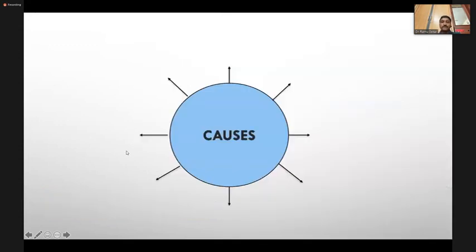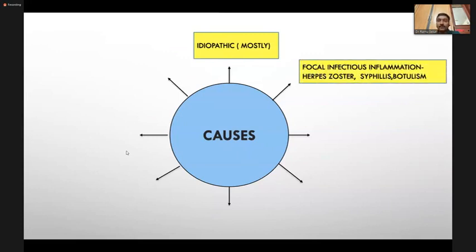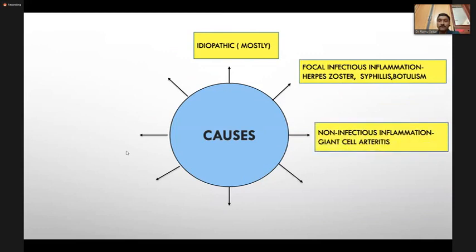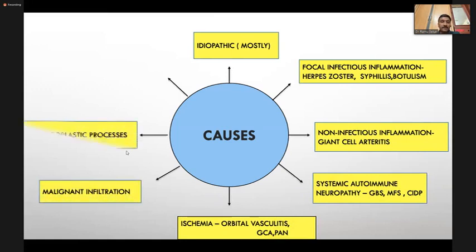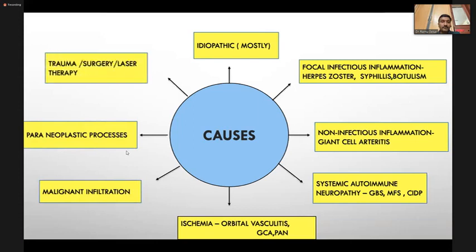Causes of tonic pupil include: idiopathic (mostly), post-infectious (herpes, syphilis, botulism), non-infectious inflammation, giant cell arteritis, systemic autoimmune disorders such as GBS and Miller-Fisher variant, CIDP, ischemia including orbital vasculitis and GCA and PAN, malignant infiltration, paraneoplastic process, and local causes such as trauma, surgery, or laser therapy.